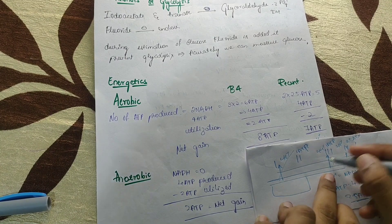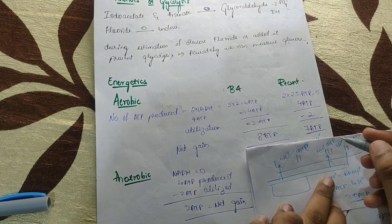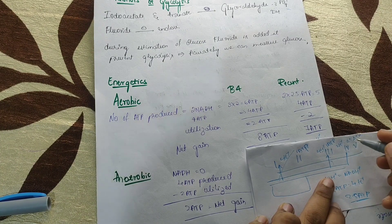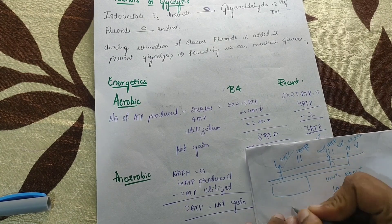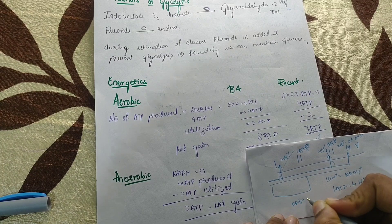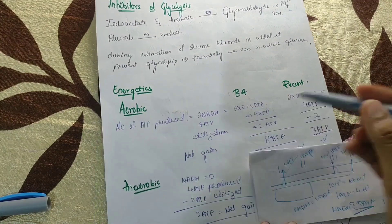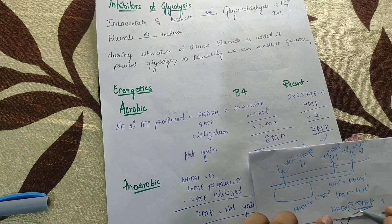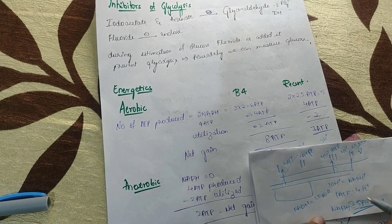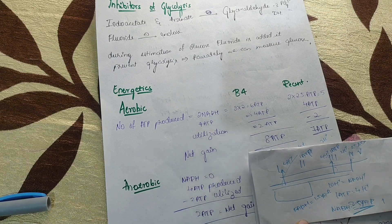If FADH2 enters, it directly enters at complex 2, so complex 1 is bypassed. That gives 4 protons (1 ATP) plus 2 protons (0.5 ATP) — so for FADH2, 1.5 ATPs are produced. In summary: for NADH, 2.5 ATPs are produced; for FADH2, 1.5 ATPs are produced.